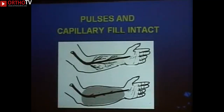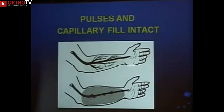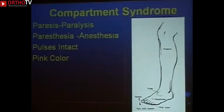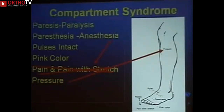Pulselessness is not a finding of compartment syndrome — that is a finding of arterial injury. Pulses and capillary fill are generally intact with compartment syndrome because the pressure builds up and cuts off capillaries and arterioles but leaves the main artery open, so the hand may actually be pinker than normal. My six P's are: paresis leading to paralysis, paresthesia leading to anesthesia, pulses and pink color present, pain with passive stretch — which goes away once anesthesia sets in — and pressure.